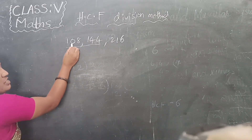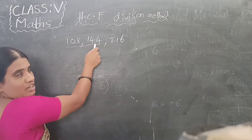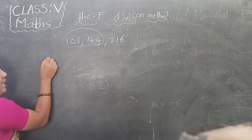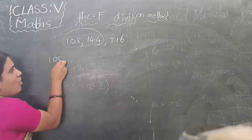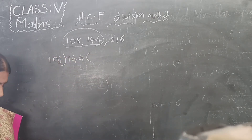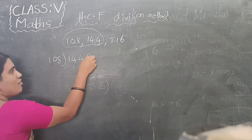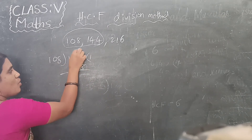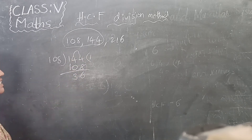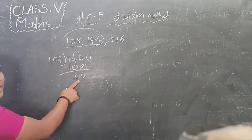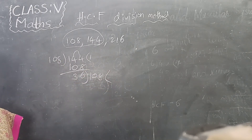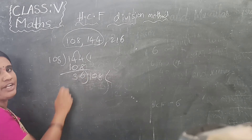First, check that the numbers are in ascending order — yes, they are. So take the first two and do the division. 108 with 140: 108 ones are 108. So the remainder is 36. Again, do the division with 108.